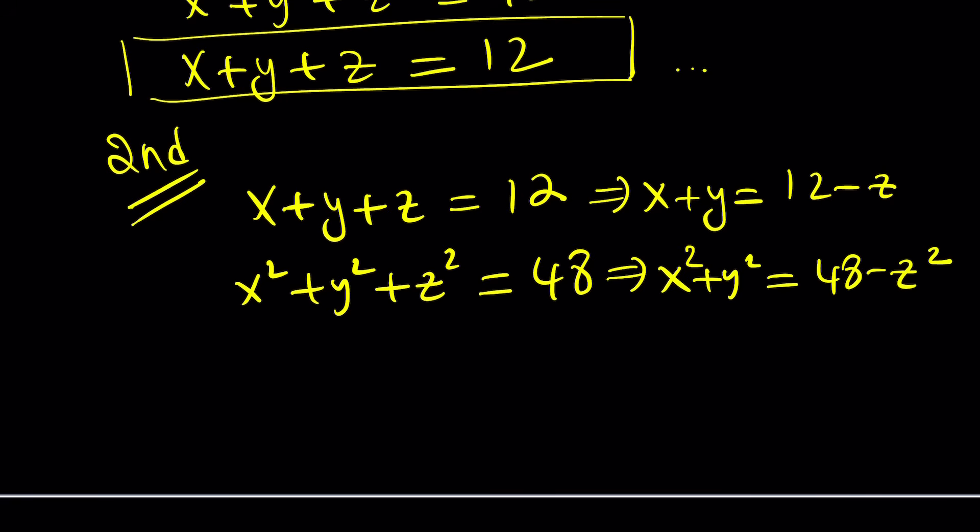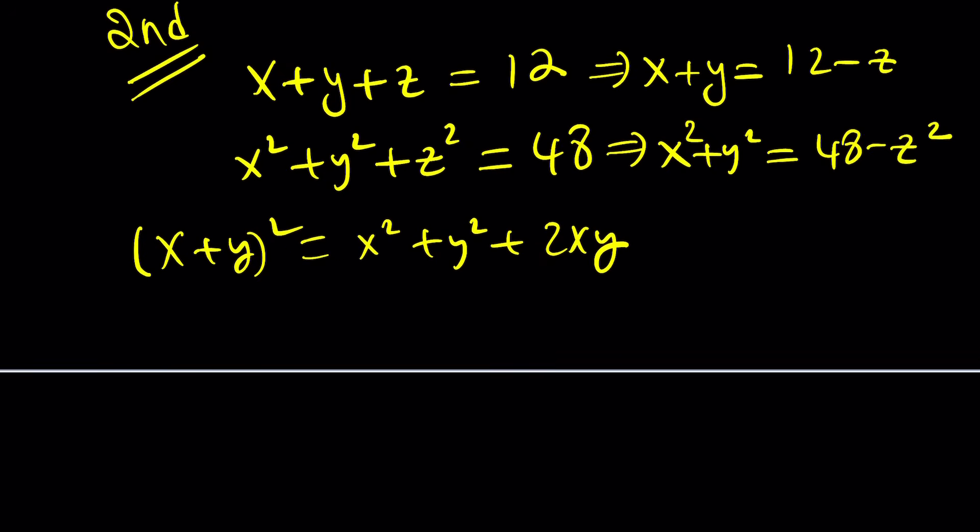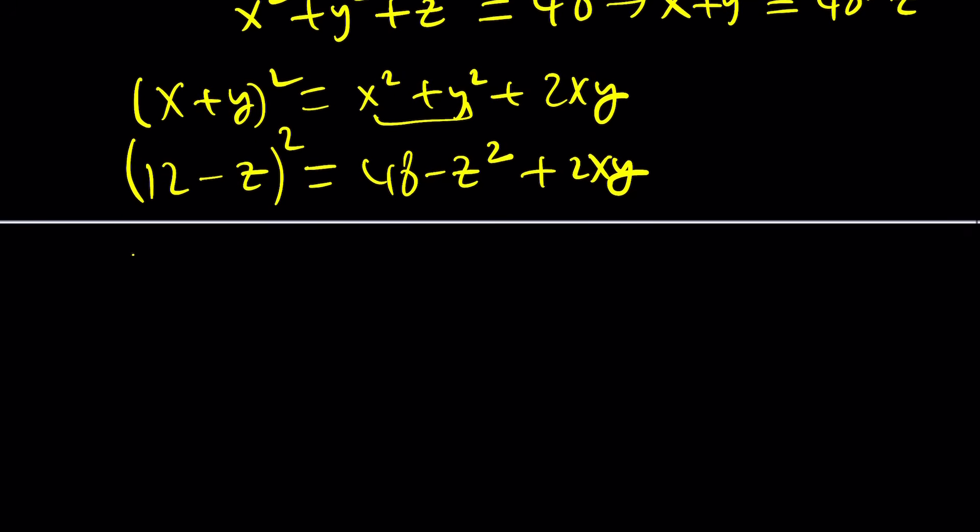And then I can do x squared plus y squared, which I can write as 48 minus z squared. And then maybe I can do something with this, like square x plus y. You should be getting x squared plus y squared plus 2xy. And then we know that x plus y is equal to that. So if you square 12 minus z, and if you replace x squared plus y squared with 48 minus z squared, and then plus 2xy, maybe this is going to give you something helpful. Who knows? Let's go ahead and expand it.